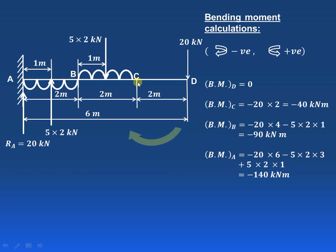At point C, the 20 kN force produces a clockwise moment. The perpendicular distance from D to C is 2 meters, so it is 20 into 2 that is 40. But as it is clockwise and we have considered the convention as negative, the bending moment at C is minus 40 kN meter.